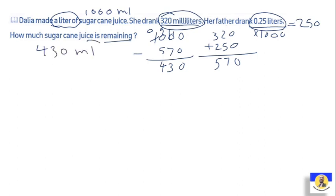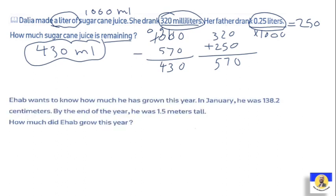Next question: Ehab wants to know how much he has grown this year. In January he was 138.2 centimeters. By the end of the year he was 1.5 meters, which means how many centimeters? We multiply by 100, which gives us 150 centimeters.